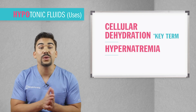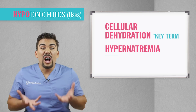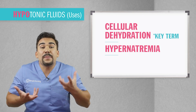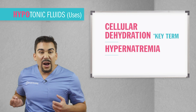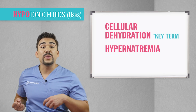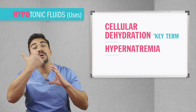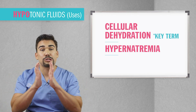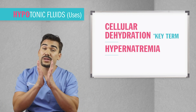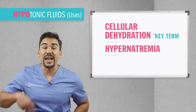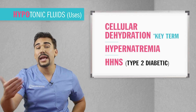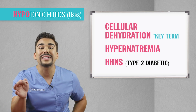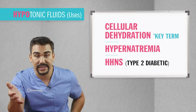All that salt in the blood piles up in the bloodstream and sucks out fluid inside the cell to outside the cell, causing those cells to shrink, known as cellular dehydration. Condition number two is HHNS — hyperosmolar hyperglycemic non-ketotic state, also called HHS for short — basically a type 2 diabetic disorder with uncontrolled high blood sugar.